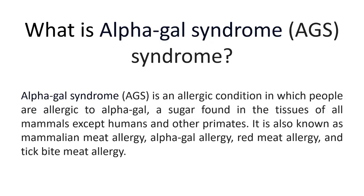Alpha-GAL syndrome (AGS) is an allergic condition in which people are allergic to alpha-GAL, a sugar found in the tissues of all mammals except humans and other primates. It is also known as mammalian meat allergy, alpha-GAL allergy, red meat allergy, and tick bite meat allergy.